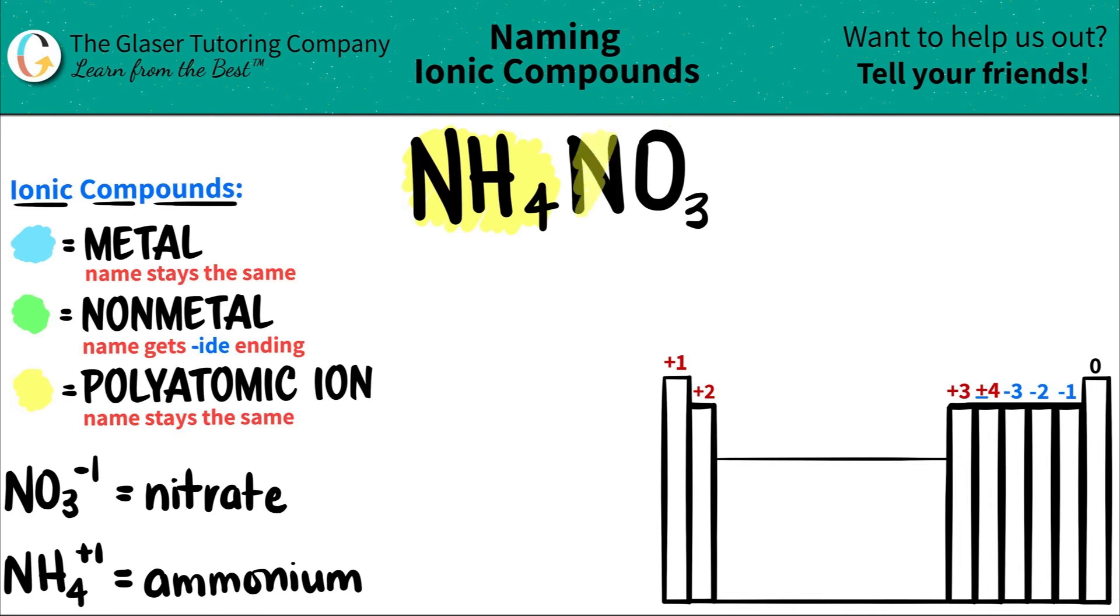So in this case, I have two polyatomic ions. And that all comes from memorizing if your teacher or professor doesn't give you a list of polyatomics.